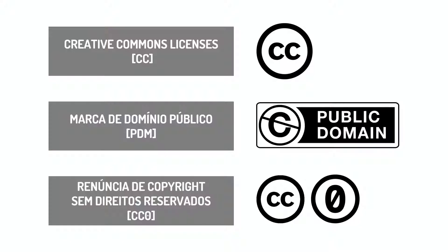Besides the six licenses, there are two public domain instruments. The public domain mark means that if I'm Portuguese and I know the work of Fernando Pessoa is entering the public domain, I can put this mark on it online, telling people from other countries that his work has entered the public domain. The CC0 is when I want to dedicate my own work to the public domain even though I'm not dead yet.